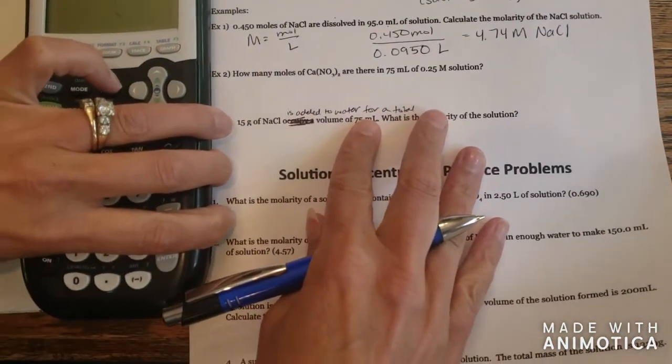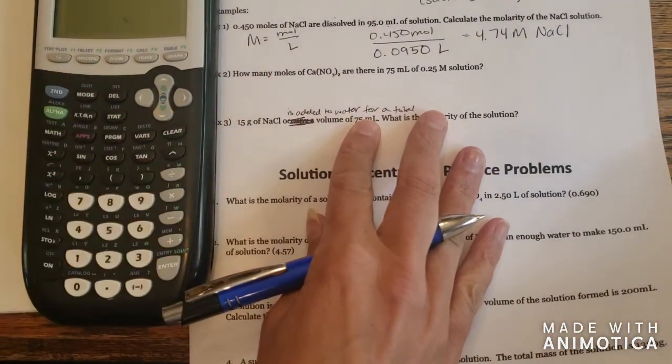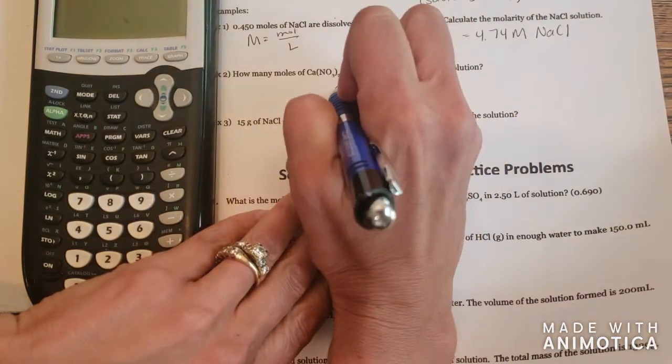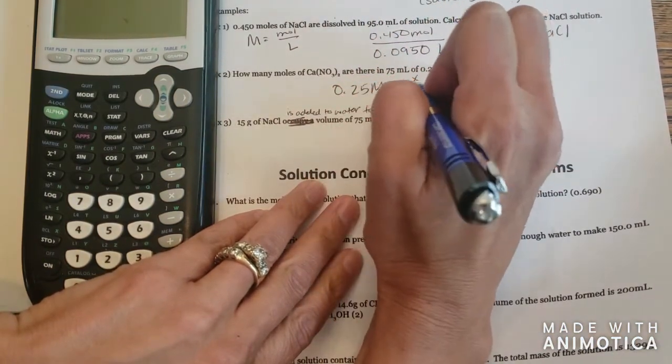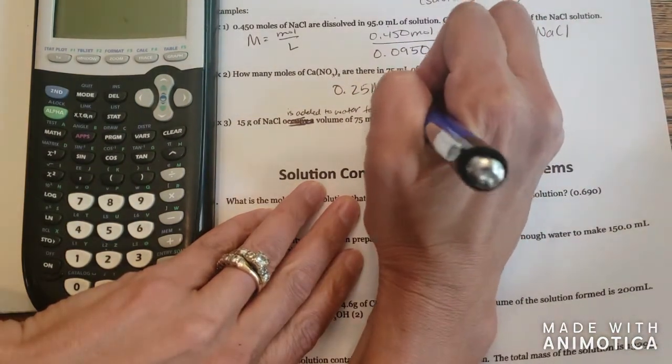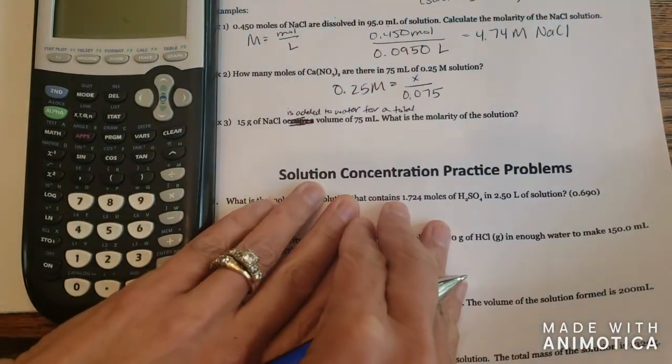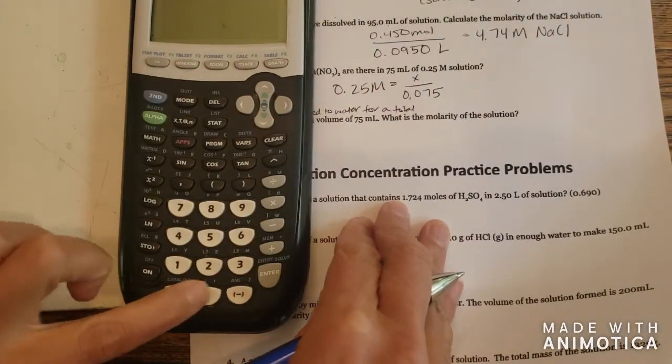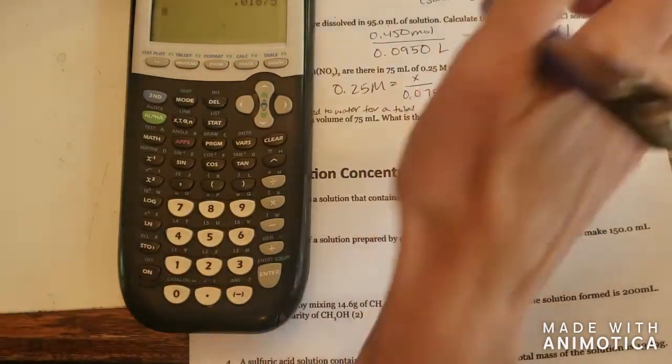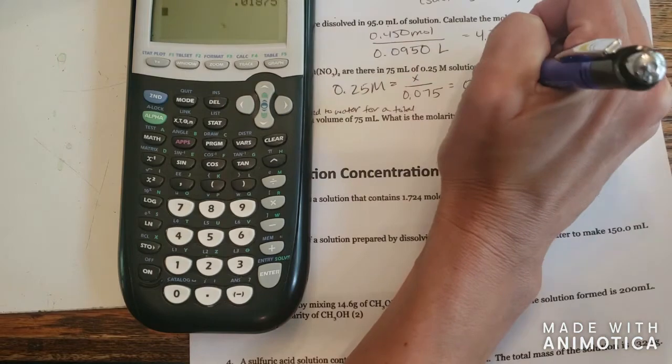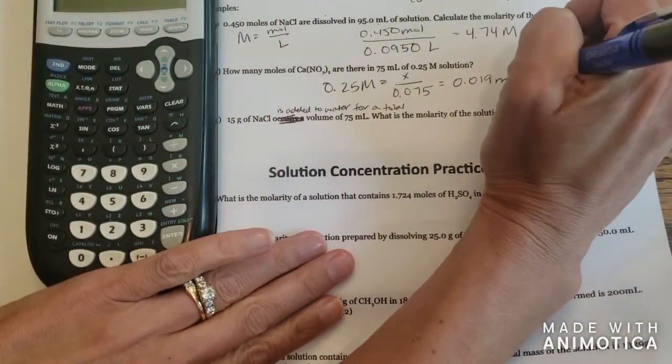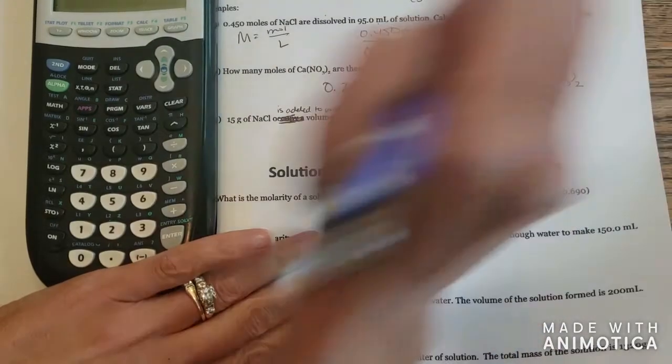Number two. How many moles of calcium nitrate are there in 75 milliliters of a 0.25 molar solution? So we know the molarity is 0.25 molar. We're looking for the moles. So I'll put X for that over the volume, and you'll notice this is in milliliters. So again, convert that to liters by dividing by a thousand. Now we're solving for X, 0.075 times 0.25. And with two significant figures, we get 0.019 moles of calcium nitrate.